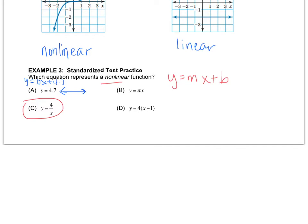This one, a lot of people accidentally pick B because they see pi and they figure it's not linear. But remember, pi is just a number. So you could even round this if you wanted to 3.14X and then we would write plus 0 because there's no intercept. And in letter D, if you distributed, you'd get Y equals 4X minus 4. Remember the distributive property? And that certainly is in slope-intercept form.